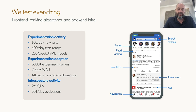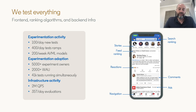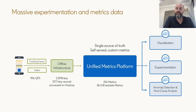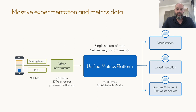This generates a huge amount of activity on our experimentation platform. We see more than 100 new tests being run every day, and 400 tests or features that are being ramped. We built a state-of-the-art large-scale experimentation platform at LinkedIn. It handles tracking and data events at more than 90,000 queries per second. We have an offline infrastructure computing petabytes of data, and a unified metrics platform computing 20,000 metrics every day — 8,000 of those are A/B testable metrics. All of this feeds into our experimentation platform, charting platform, and anomaly and alerting infrastructure.